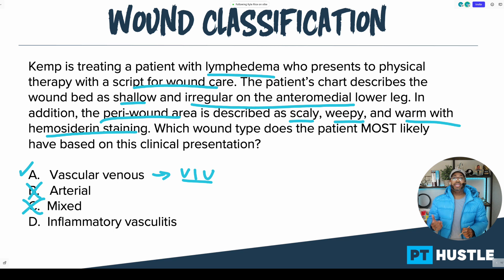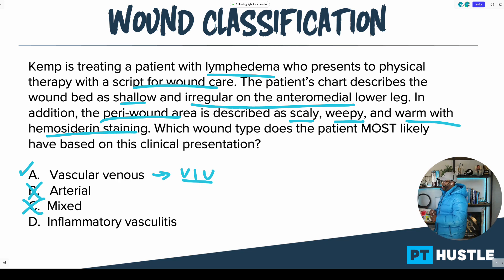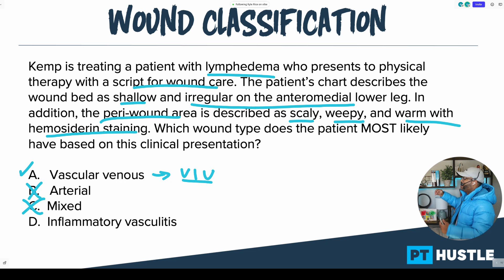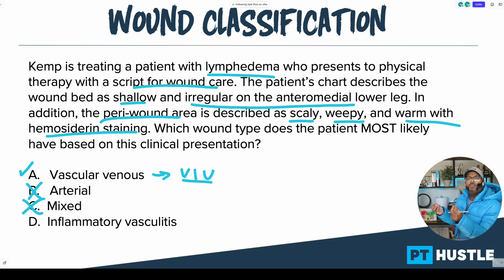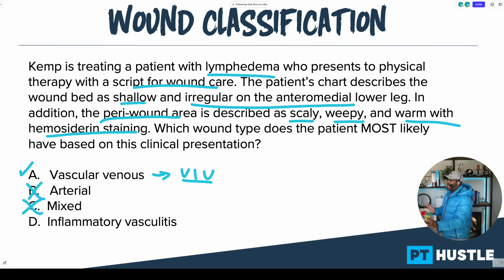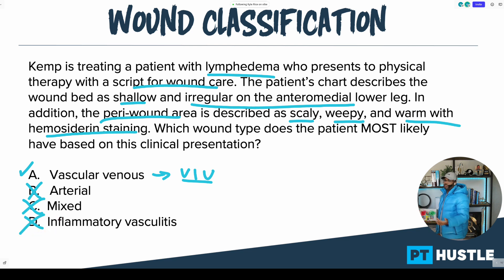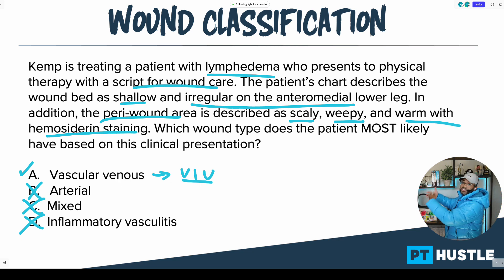Let's take a look at D: inflammatory vasculitis. I'm going to eliminate this one pretty quickly. This condition typically has a lot of deep pain associated with it — it's where there's inflammation of the vascular tissue. The patient will start to have petechiae showing up on the skin in more of a purplish color, sometimes also known as purpura. The question doesn't say anything like that — the clinical presentation is not associated with inflammatory vasculitis at all. So I can eliminate D with certainty, leaving me with my final answer of A: vascular venous, also known as a venous insufficiency wound.